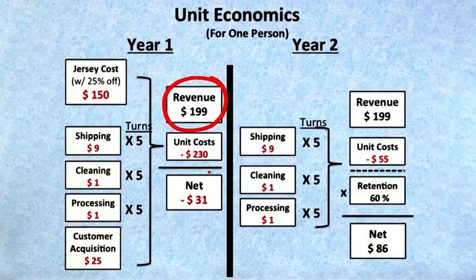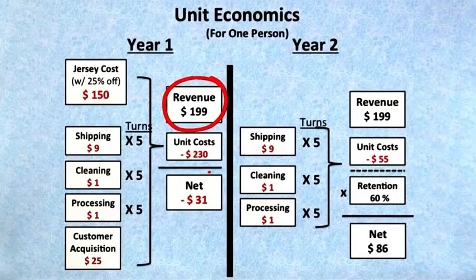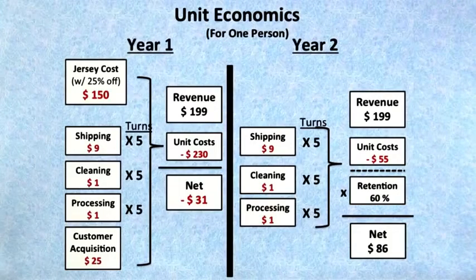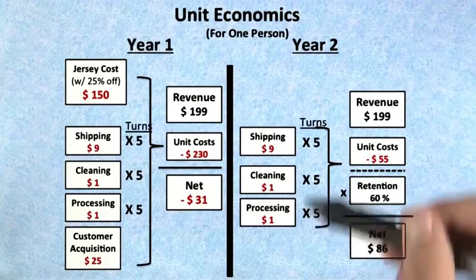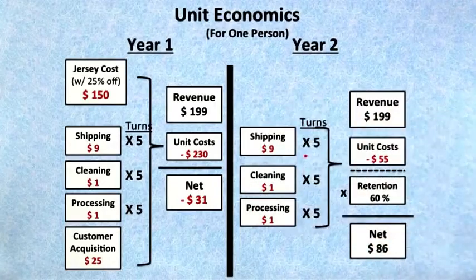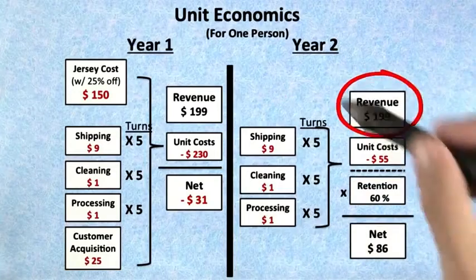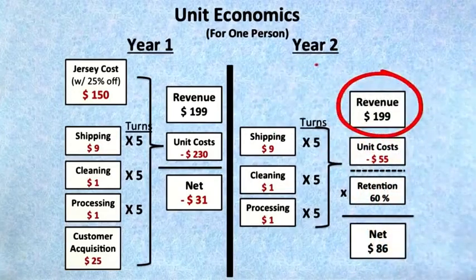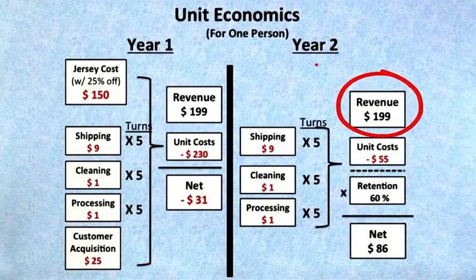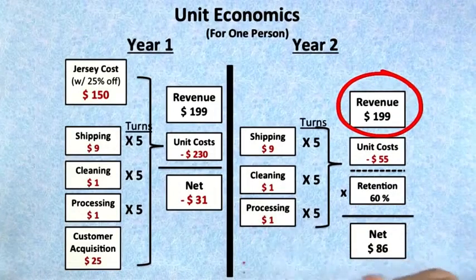Why would they do this — because they were going to lose $31 a year? Well, remember, this is to acquire a customer. What you need to look at is the customer lifetime value. What happens when this customer renews for the next year? In the next year, you don't have that jersey cost because you're still turning that jersey — he might have only used it two, three, or four times — and you don't have the customer acquisition cost because you already acquired that customer.